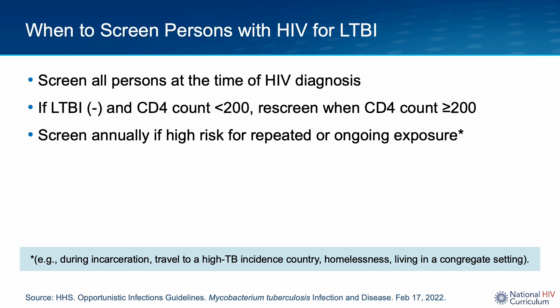Many of the screening tests we use to detect LTBI are imperfect and can be falsely negative, especially when the CD4 count is low — that is, less than 200. Persons with advanced immunosuppression should be rescreened when they have some immune reconstitution, that is when their CD4 count is greater than or equal to 200. Annual repeat screening is only recommended in situations of high risk for ongoing exposure to active TB, such as incarceration, travel to TB endemic countries, residing in congregated settings like shelters or nursing homes, and homelessness.